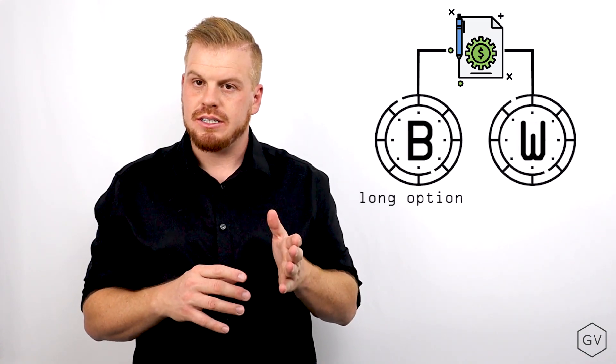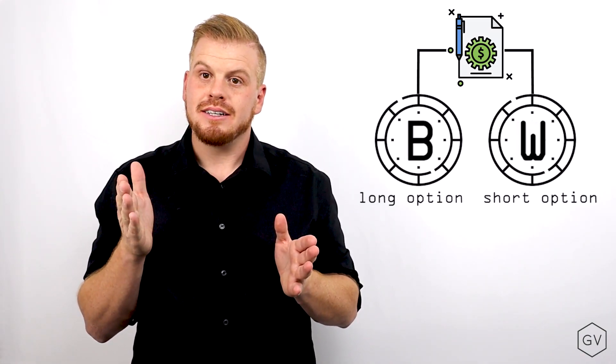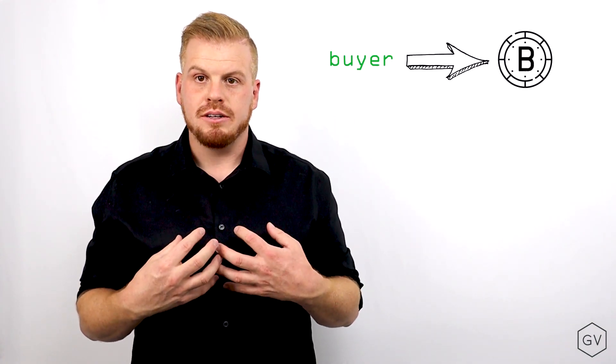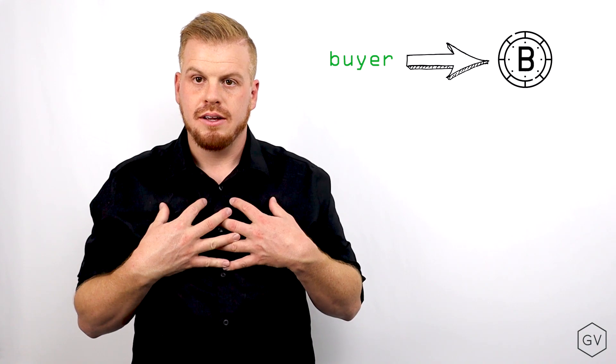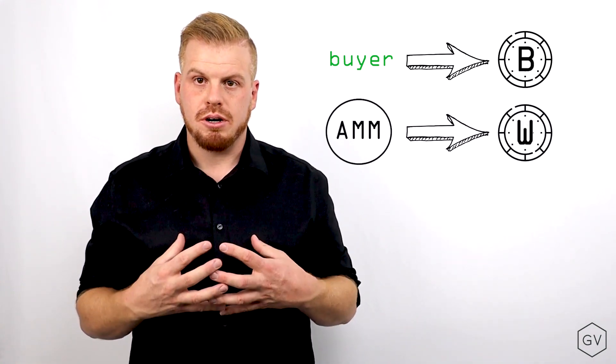You can think of a B token as the buy side of open interest and the W token as the sell side of open interest. The buyer of the option receives the B token. The AMM accumulates the W token.